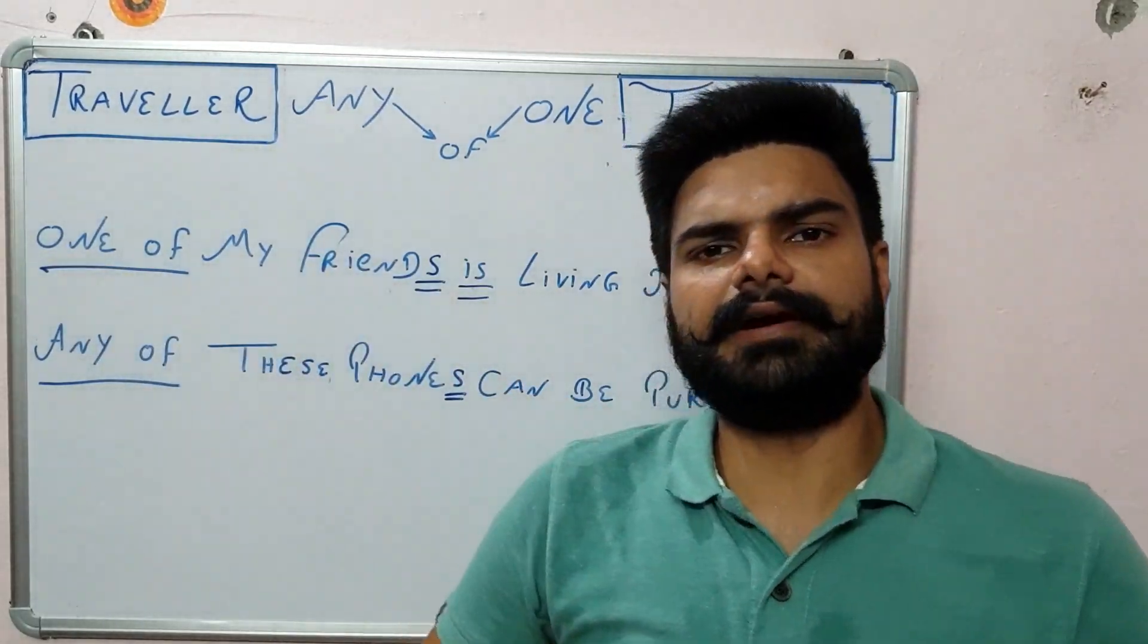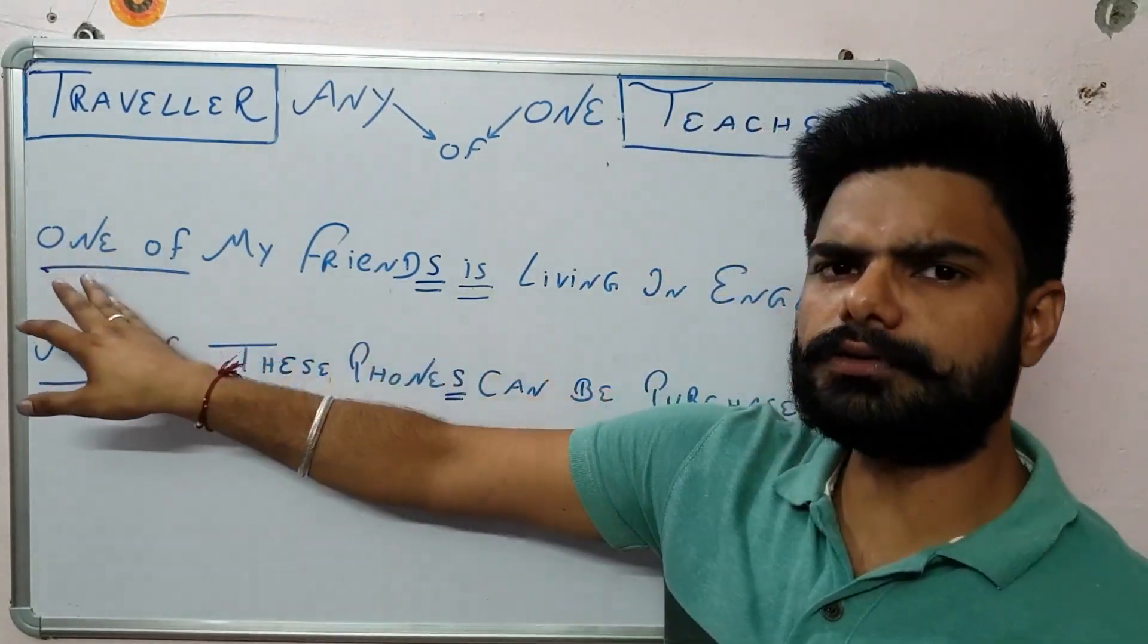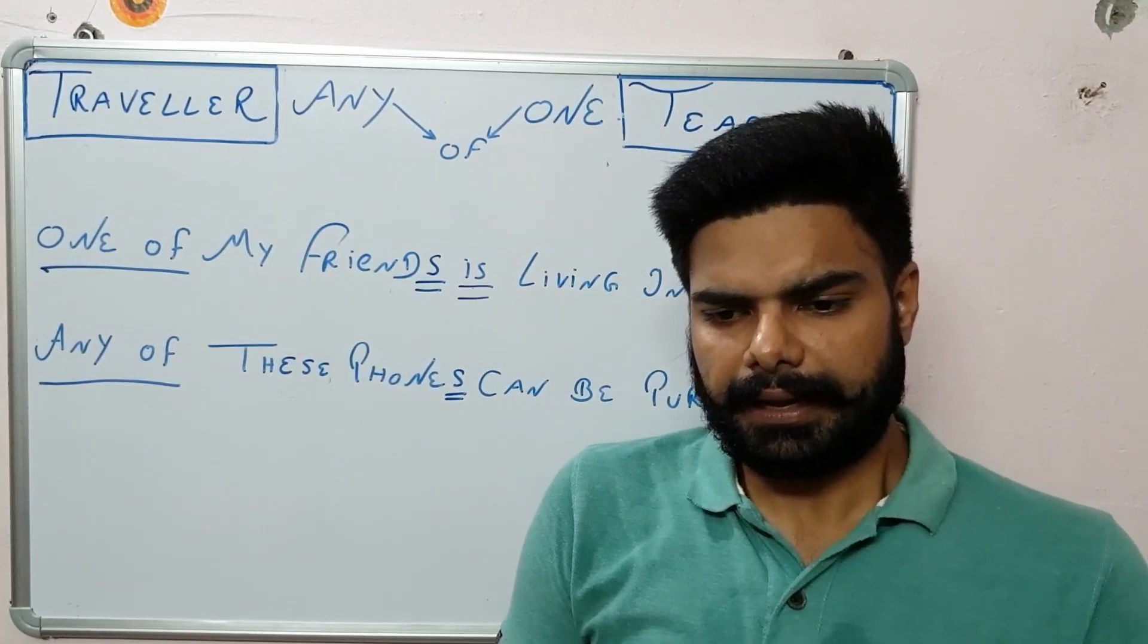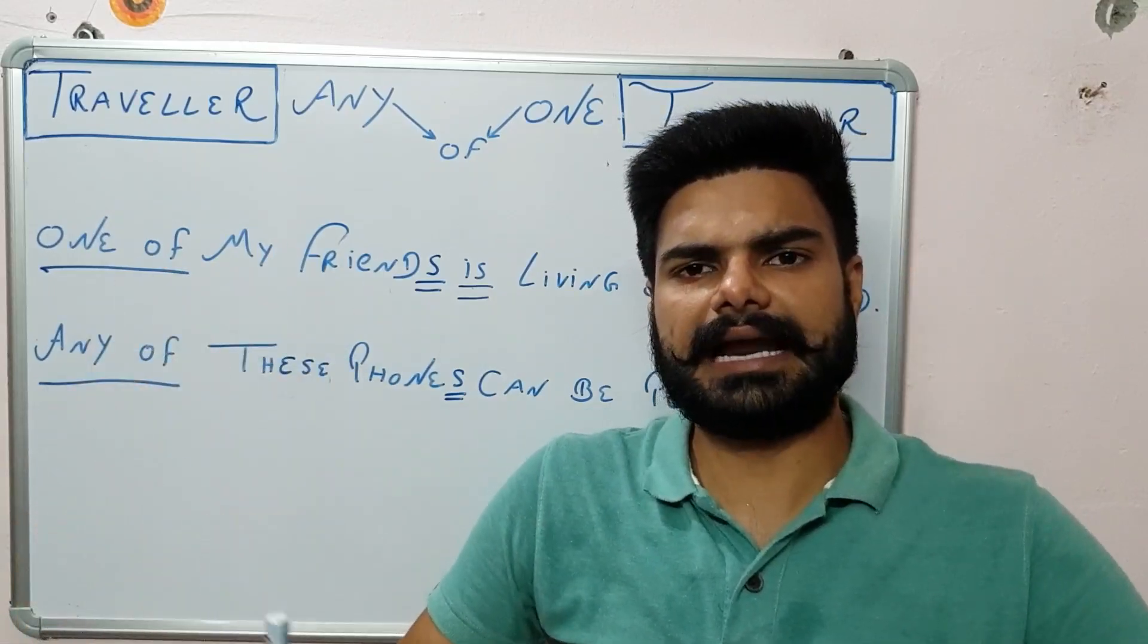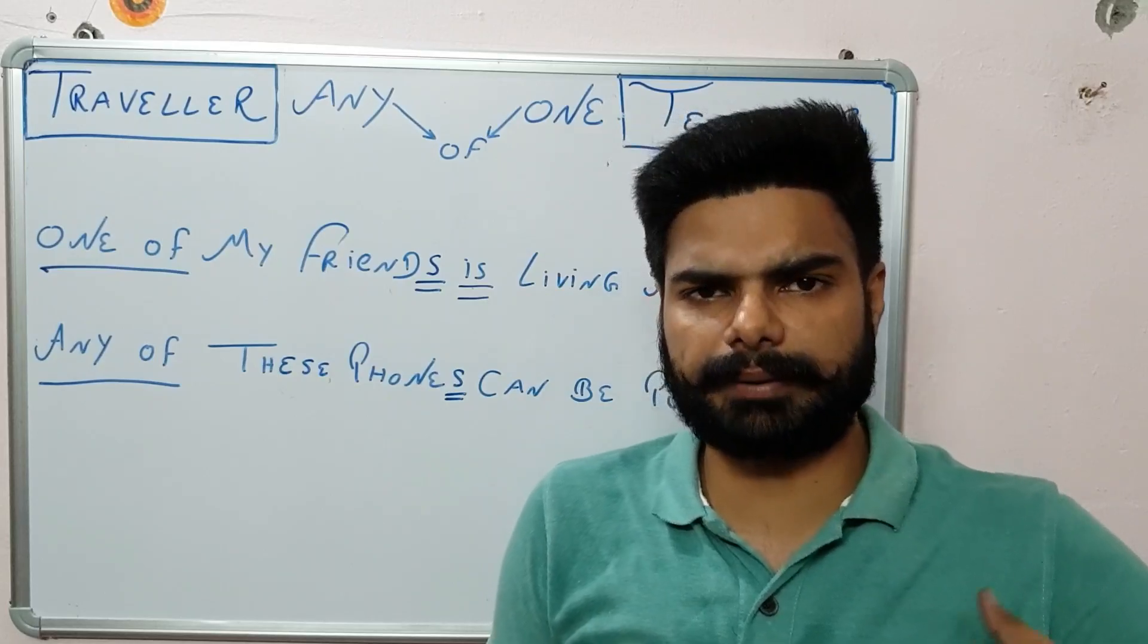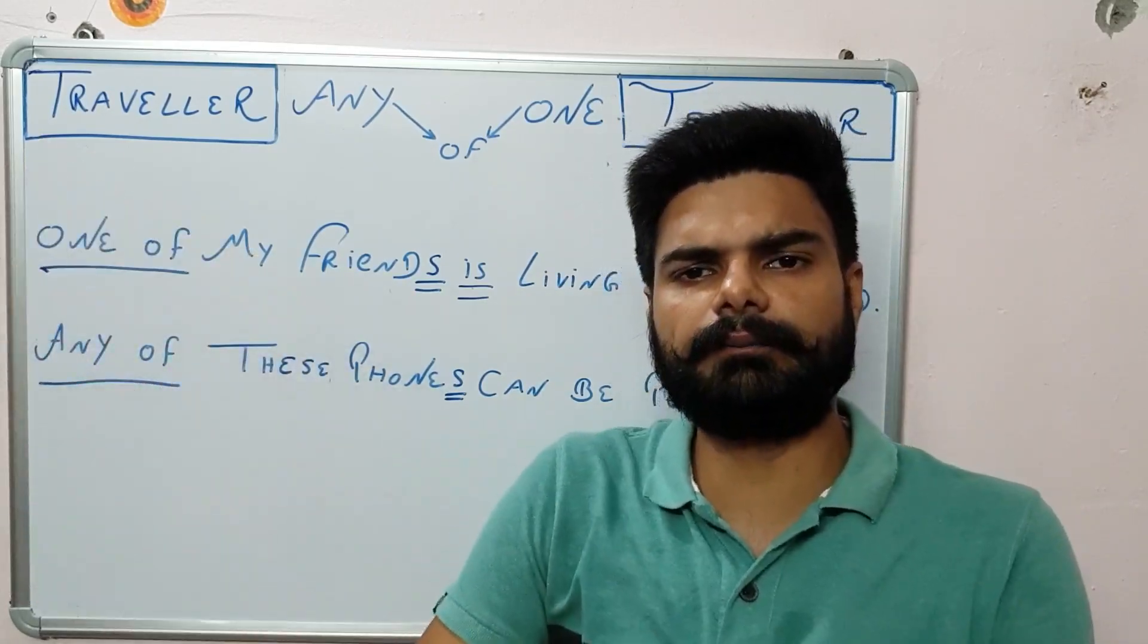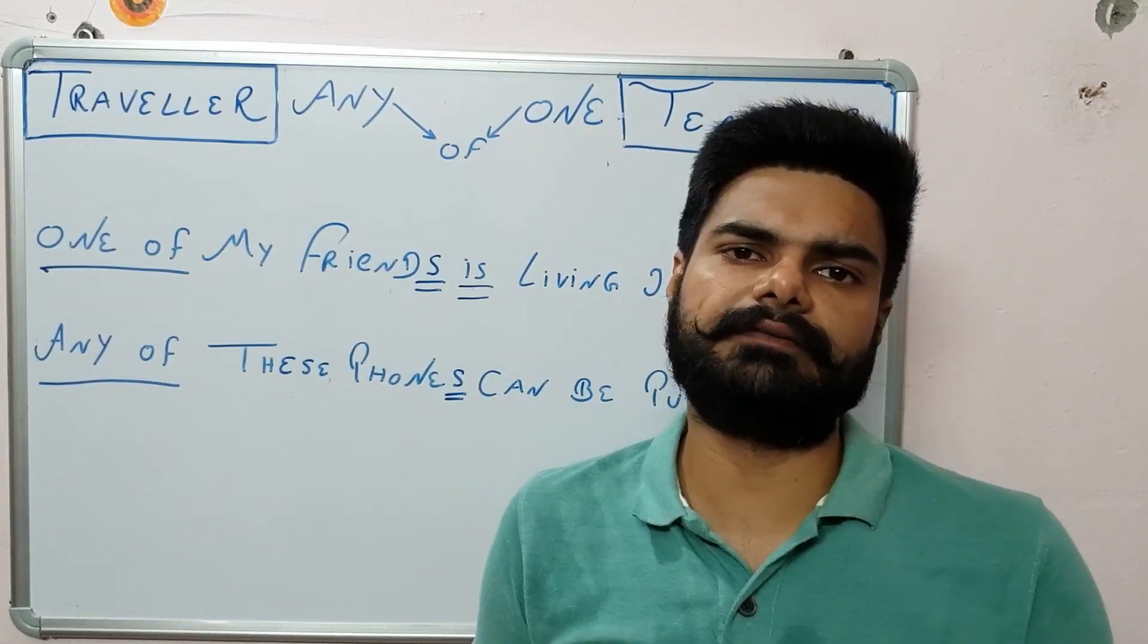So basically what we mean by one of or any of. Whenever we use one of or any of, that means we are selecting, we are choosing. Now it's an obvious case we cannot select one thing from one. If you are selecting something, obviously there will be more than one product, there will be more than one person. So only then we can choose that one of from that person, one of my friends. If I have just only one friend, I cannot say that one of my friend.